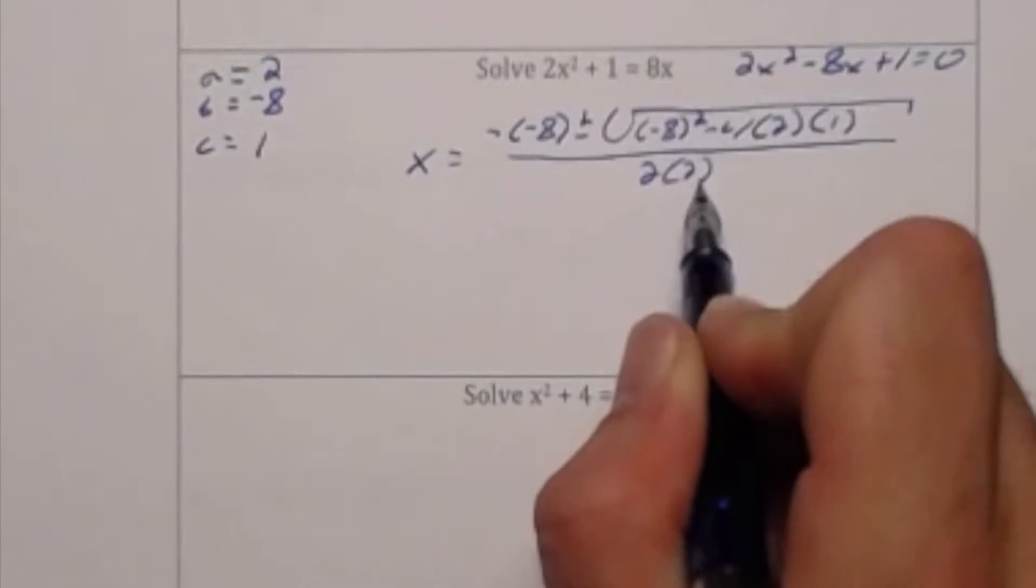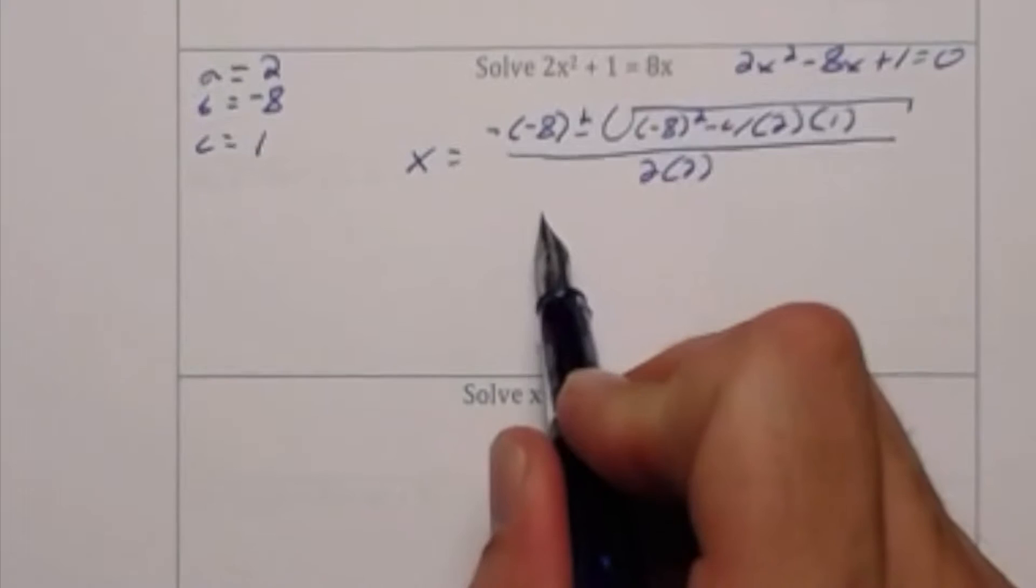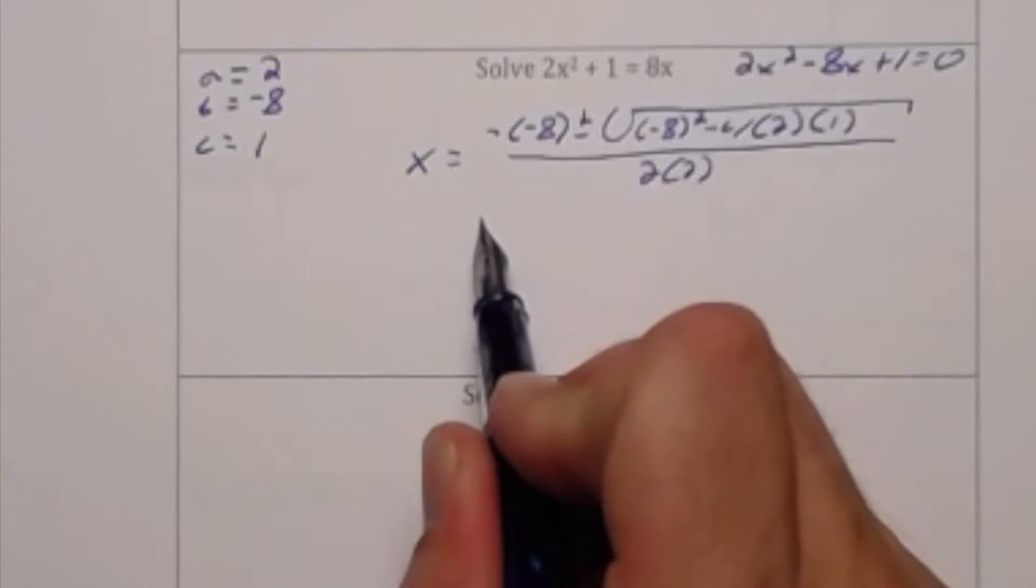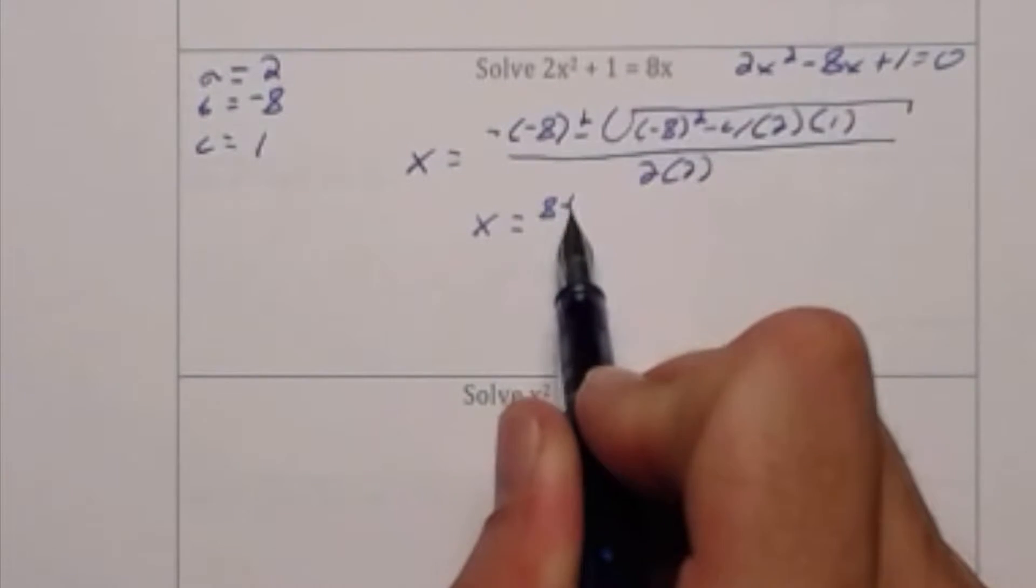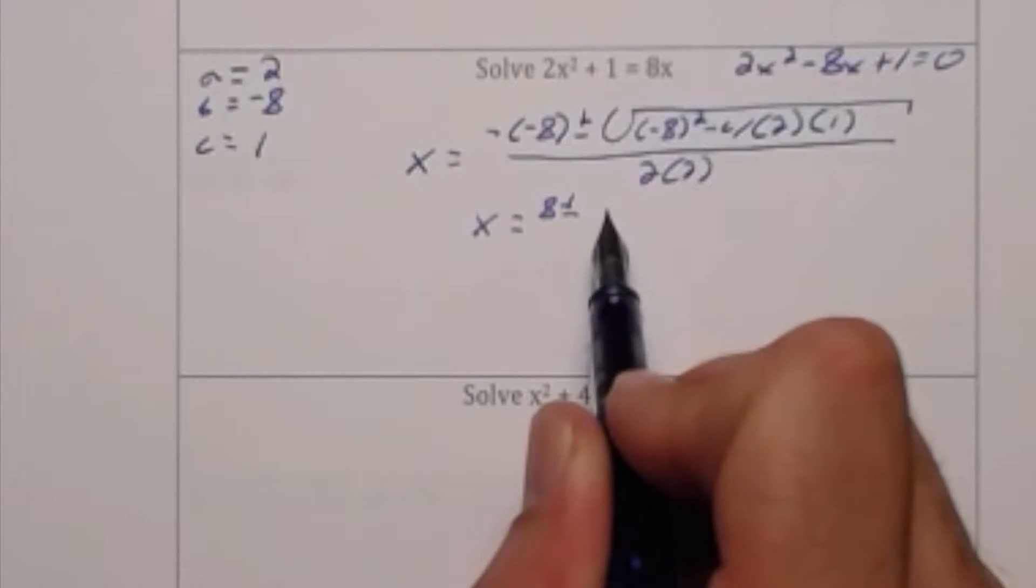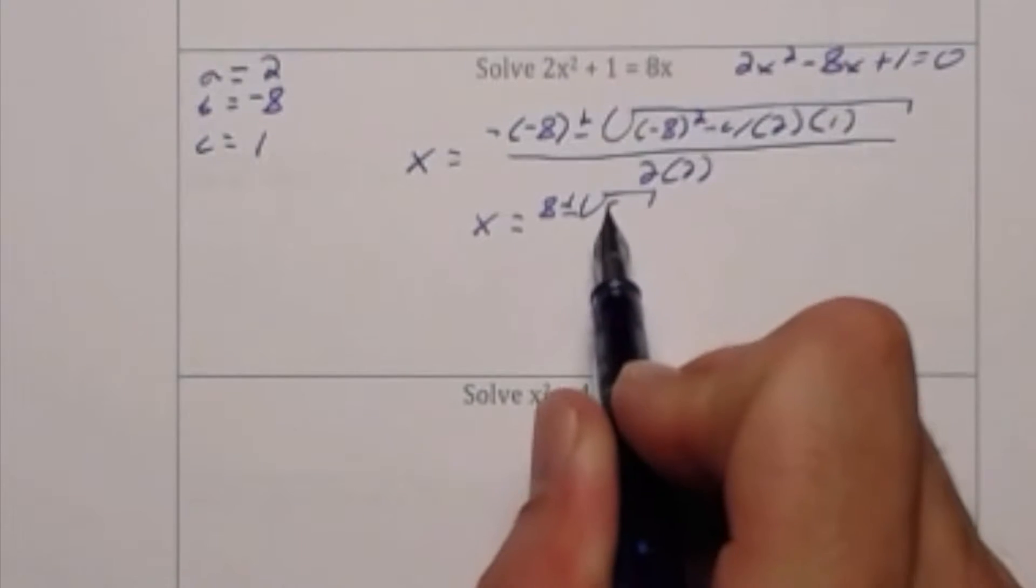Now I'm going to simplify what is inside the radical bar and I'm going to get 8 plus or minus radical 56 divided by 4. It would be easiest if I could just simplify what is radical 56.